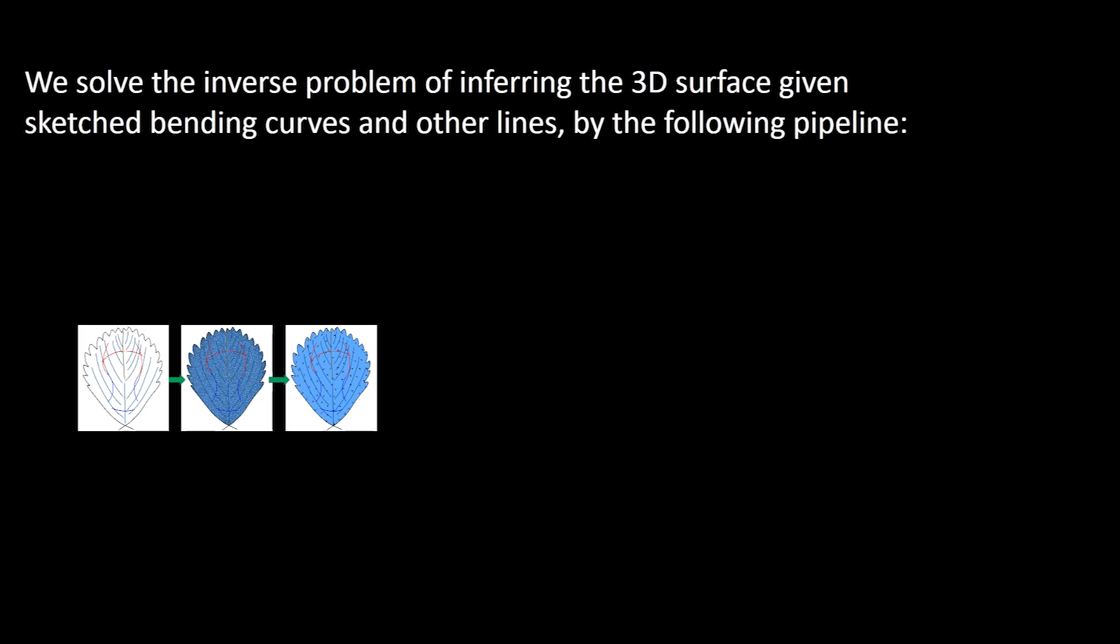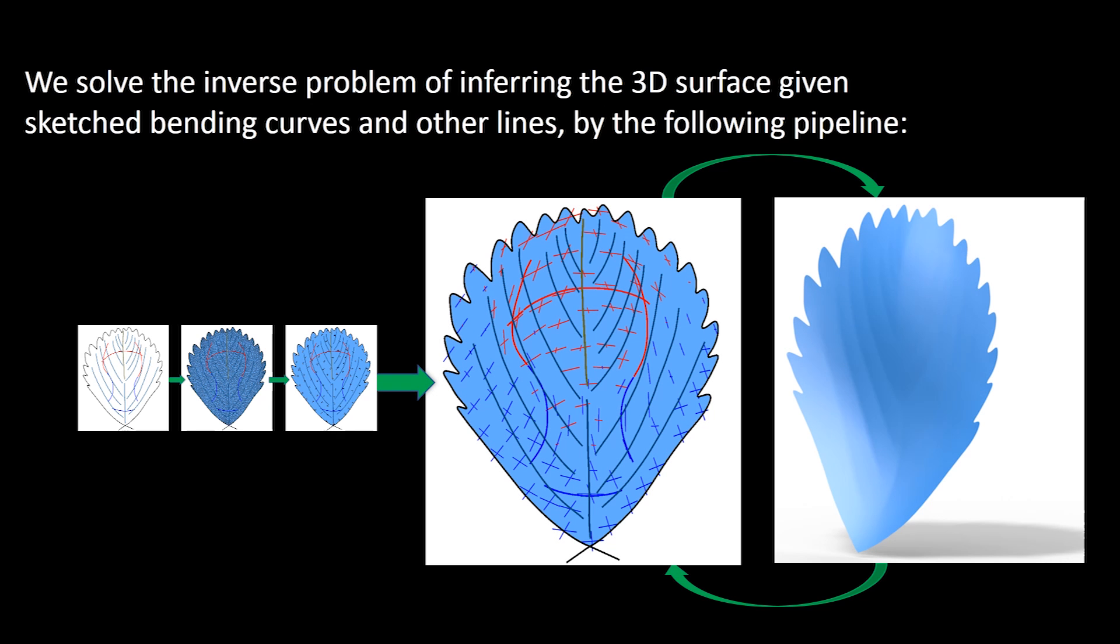Finally, there is an iterative process of jointly optimizing both the complete curvature tensor field with directions and magnitudes, and the 3D surface, represented by a height field over the 2D domain. When it converges, we get the final 3D surface.